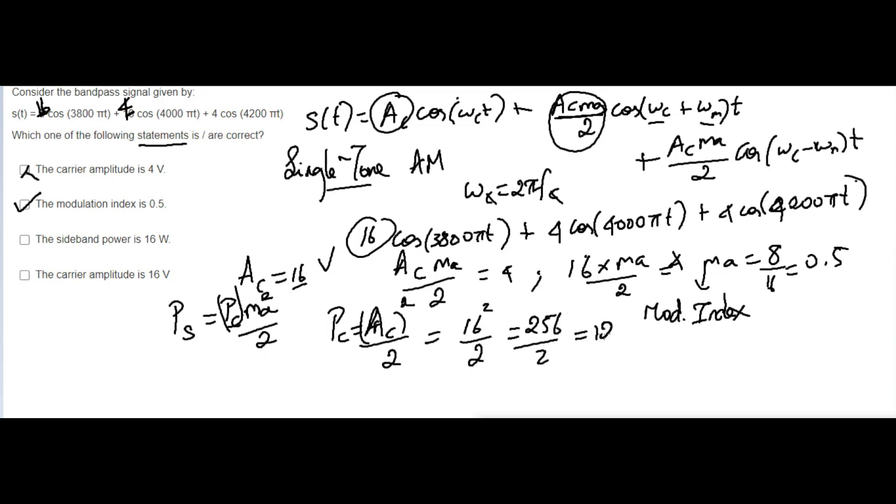So 128 is very important. Listen here, once again you just look at this: carrier amplitude is 16V, please just check, because already you know carrier amplitude is 16. And now we got Pc, so once again calculate this equation.